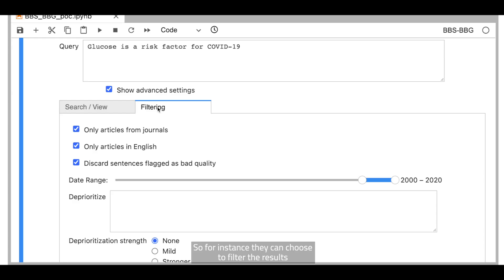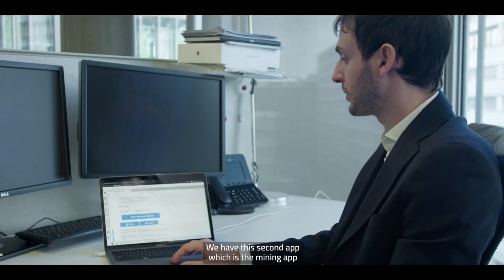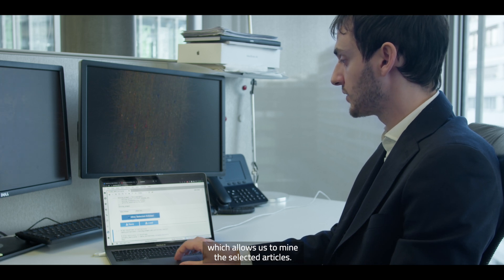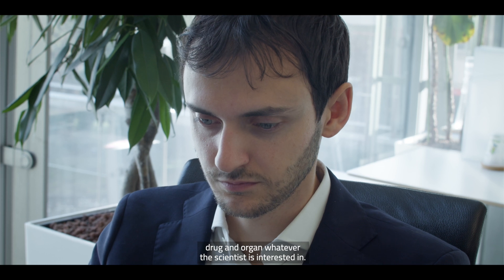So for instance, they can choose to filter the results in order to only include articles from given journals, from given date ranges, and deprioritize certain terms. We have this second app, which is the mining app, which allows us to mine the selected articles. So for instance, we have cell compartment, cell type, chemical, pathway, protein, drug and organ, whatever the scientist is interested in.